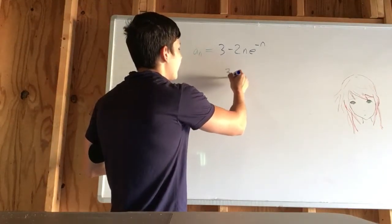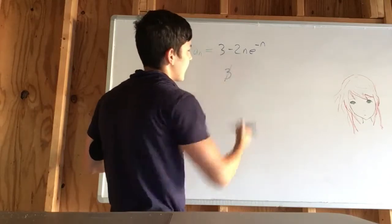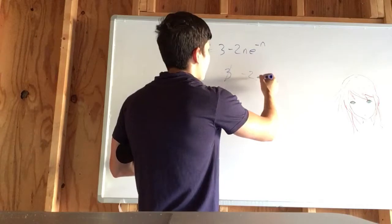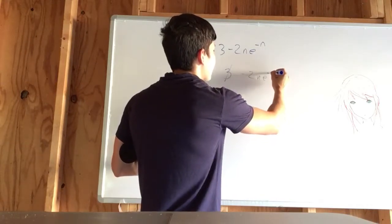The 3 here is going to go away when you take its derivative. Then you're left with this to work with, negative 2ne to the negative n.